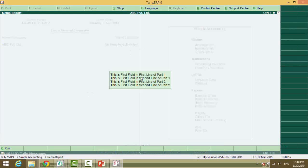Demo TDL. This is the first field in the first line of part 1. This is the first field in the second line of part 1. This is the first field in the first line of part 2. This is the first field in the second line of part 2. Parts are vertical and lines also go vertical. So they are just right below one other.